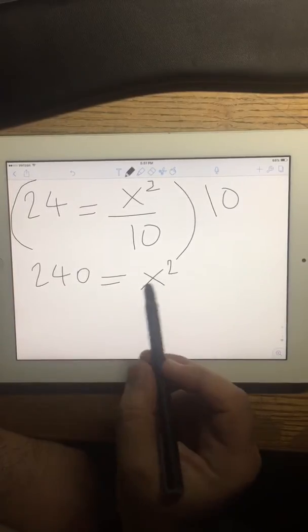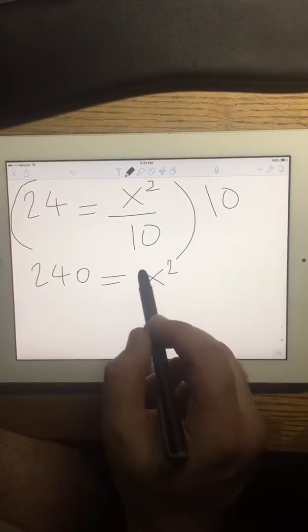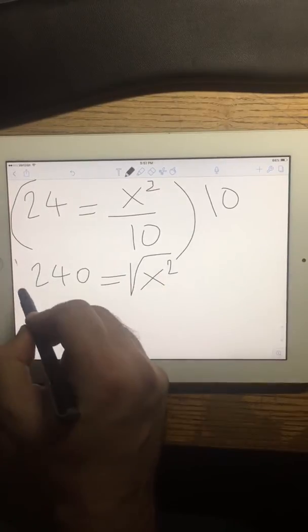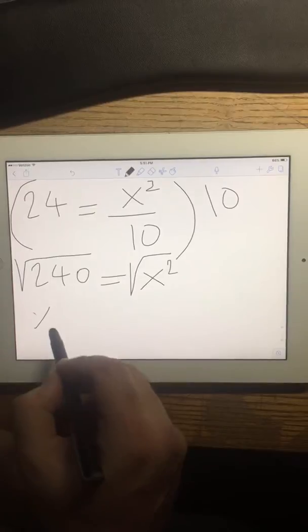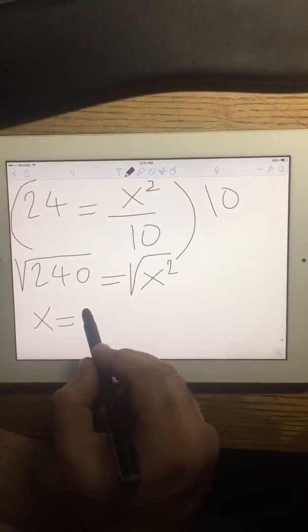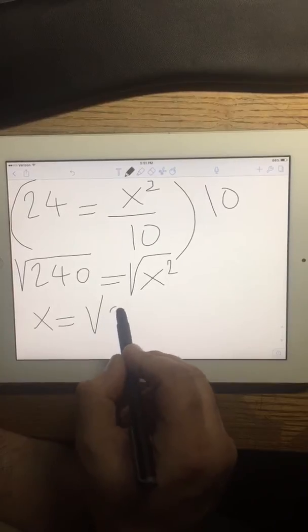Now I have to simplify both sides, so I do a square root and a square root, so x equals the square root of 240.